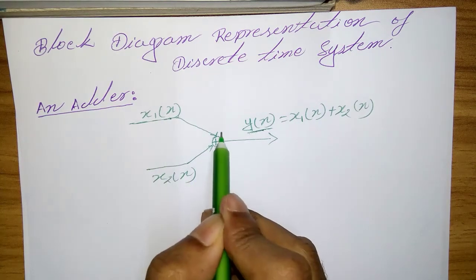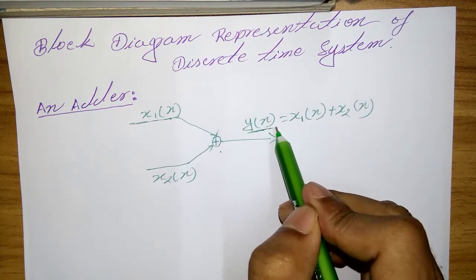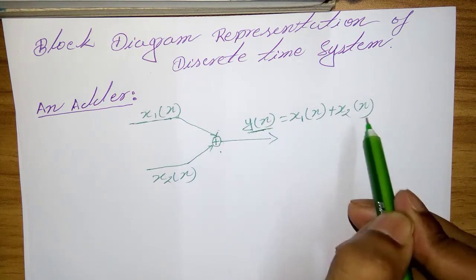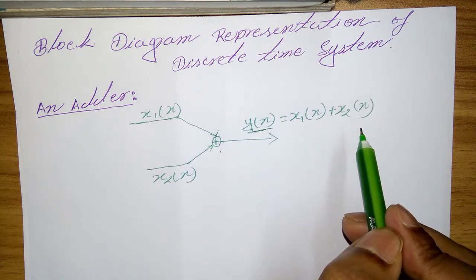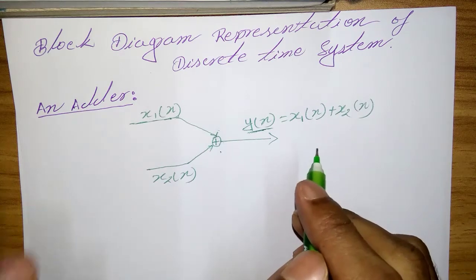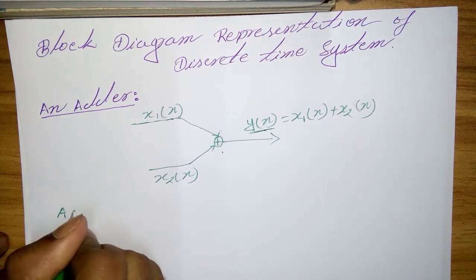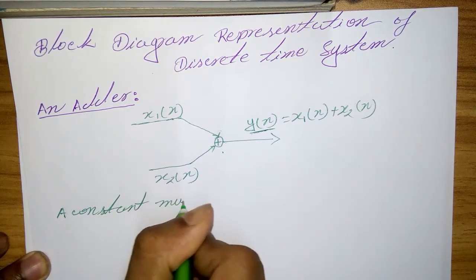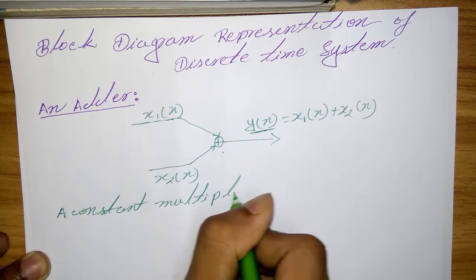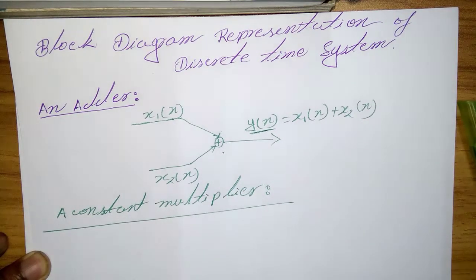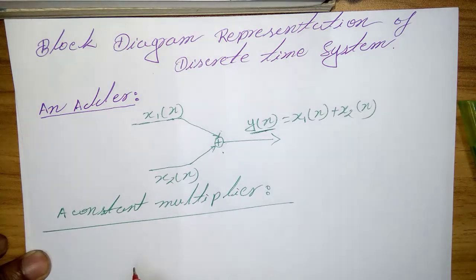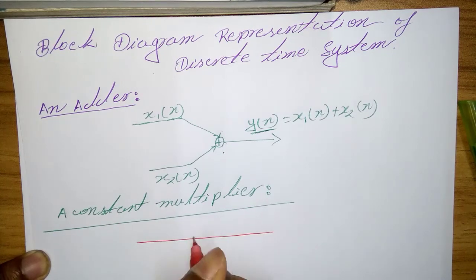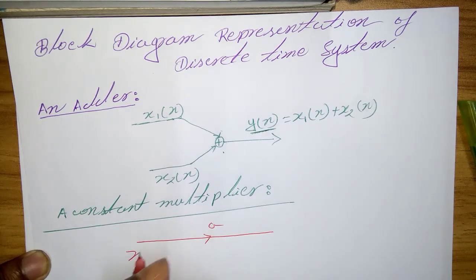Here x1(n) and x2(n) use the adder, and the summation result is y(n) = x1(n) + x2(n). Next one is a constant multiplier. In this case, the operation is represented by simply applying a scale factor on the input x(n).